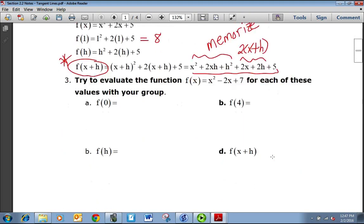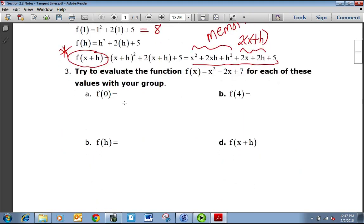So let's practice some more. We've got a different function here, x squared minus 2x plus 7. So it's going to be 0 squared minus 2 times 0 plus 7, which is just equal to 7. If we put 4 in, we get 4 squared minus 2 times 4 plus 7. That's 16 minus 8 plus 7. 16 minus 8 is 8, plus 7 is 15.